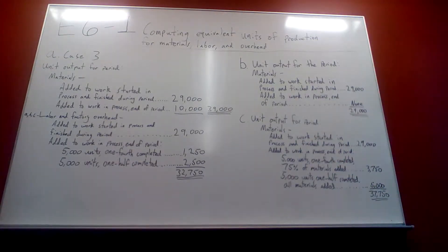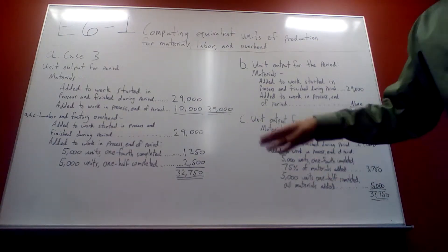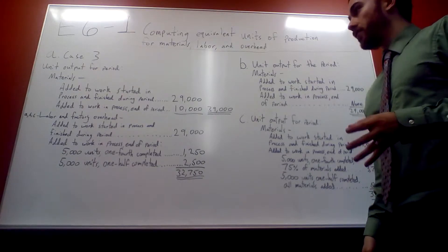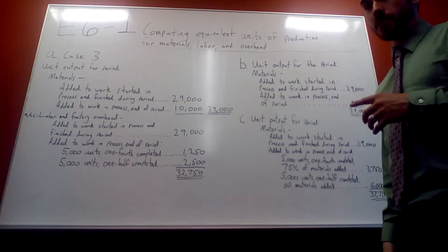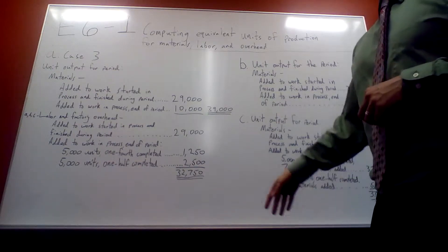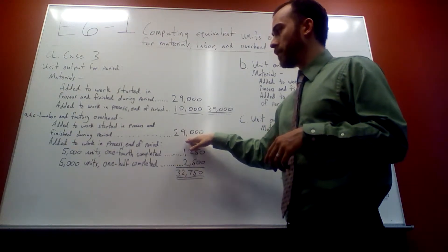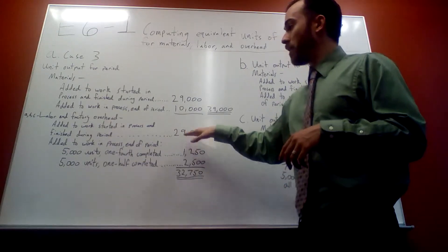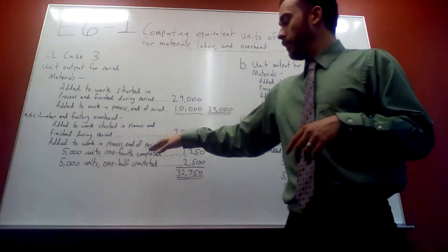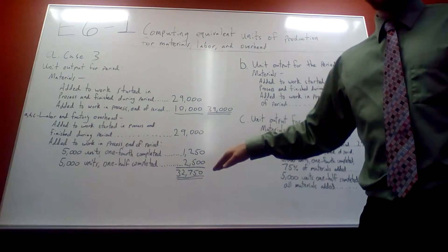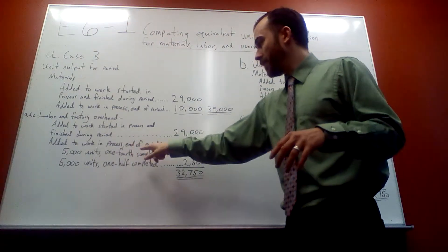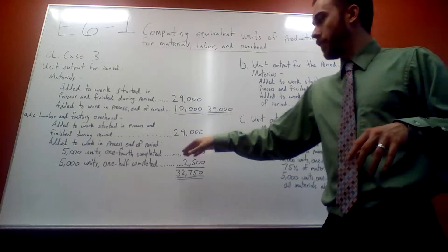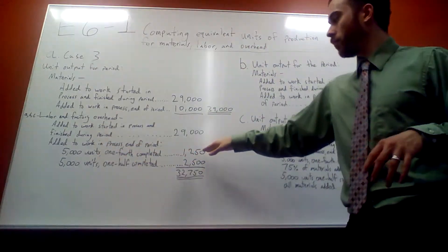Now the labor and overhead are added evenly throughout the process. So they're going to be different than the materials. It's still whatever's finished, whatever started and finished during the period. But also, whatever it says at the end, like if it says one fourth or one half, that's exactly what it's going to be. So 5,000 times one fourth would be 1,250, 5,000 times one half would be 2,500.